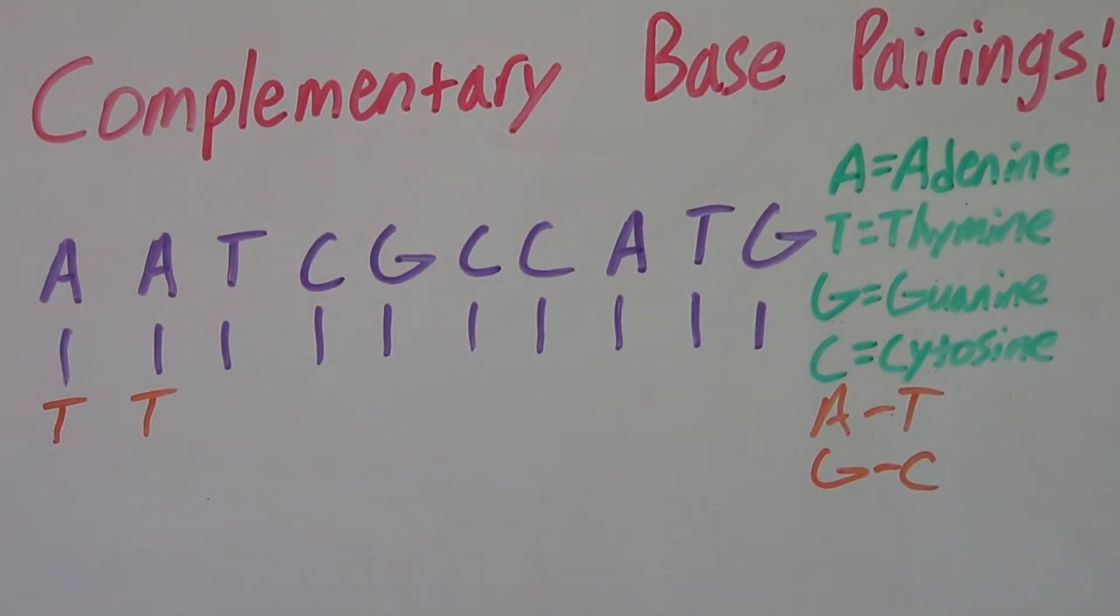Then we have a T. What does T pair with? T pairs with A, so we write A under here. Next, we have C and C pairs with G. And you continue this all the way down the DNA.